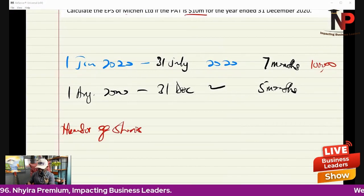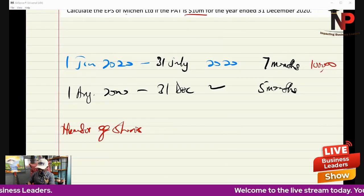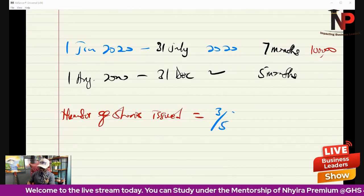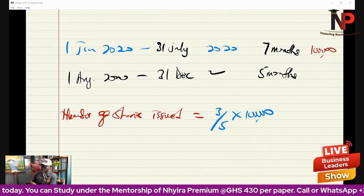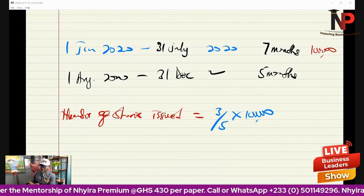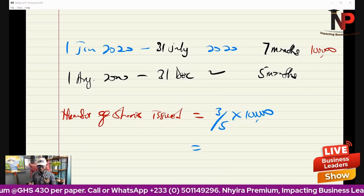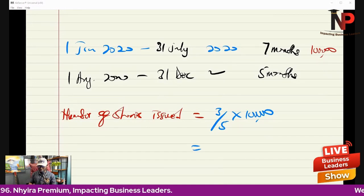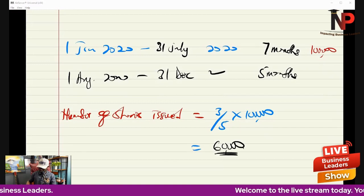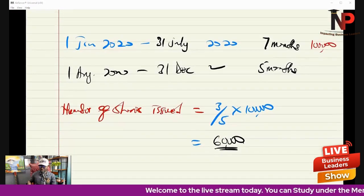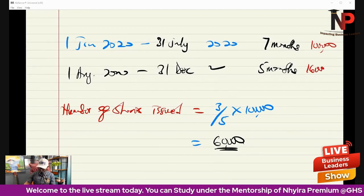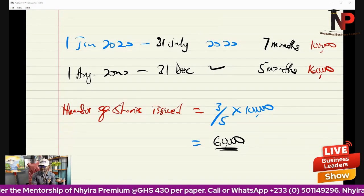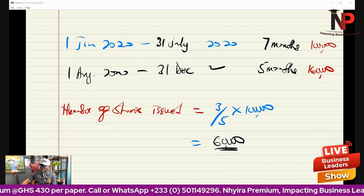Number of shares from the right issue: they said 3-for-5, so you get three new shares for every five you have. That's 3/5 times 100,000, giving us 60,000 shares. So from 1st August, the total number of shares becomes 160,000.